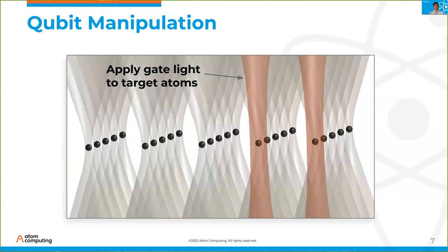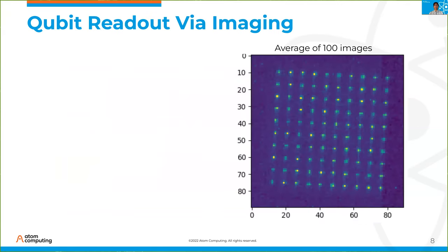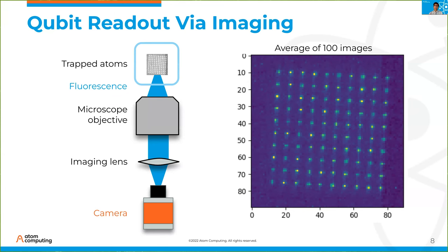What about gates? We take acousto-optic deflectors, send the gate light through them, and apply RF tones to the AODs to target specific atoms we want to drive — like the two red columns of light you see in the diagram. For imaging and measurement, we take pictures of the atoms: we apply resonant light, causing the atoms to fluoresce, then use a microscope objective to collect that light and image it onto a very sensitive camera. Averaging 100 images gives a grid of spots where each point of light corresponds to a specific atom.